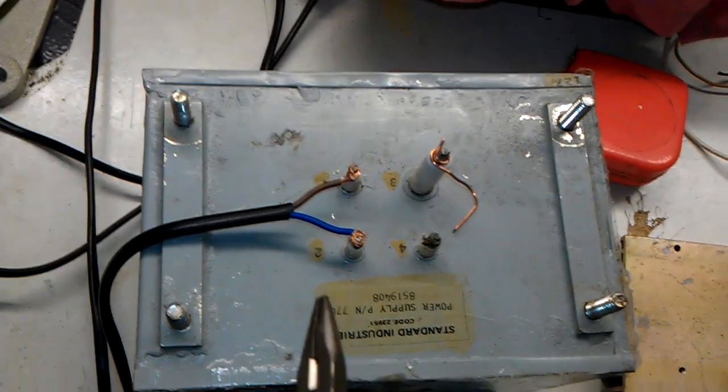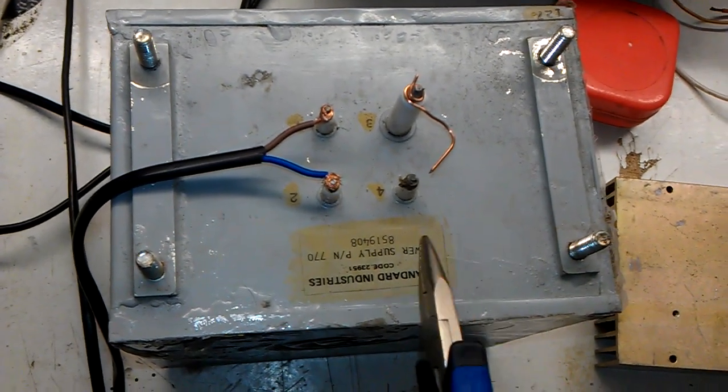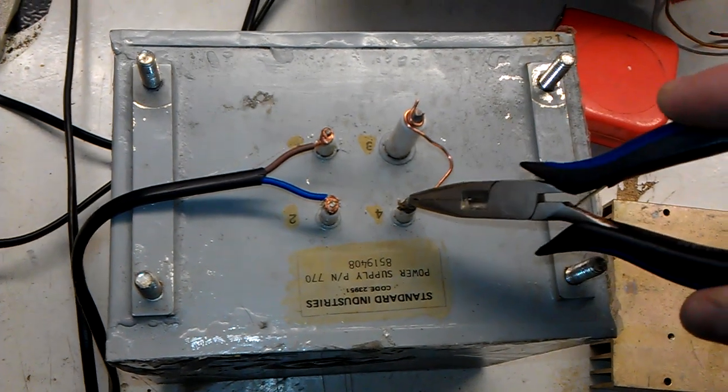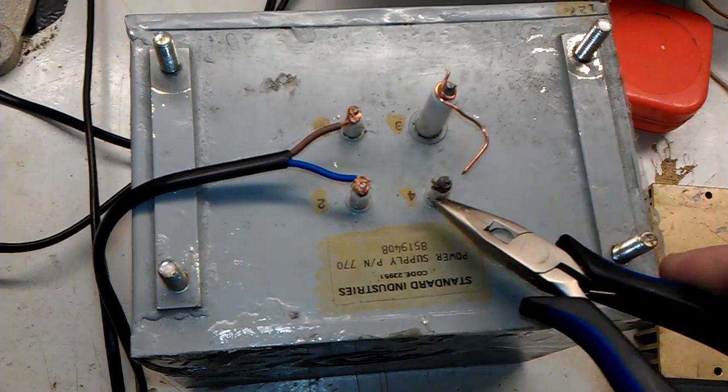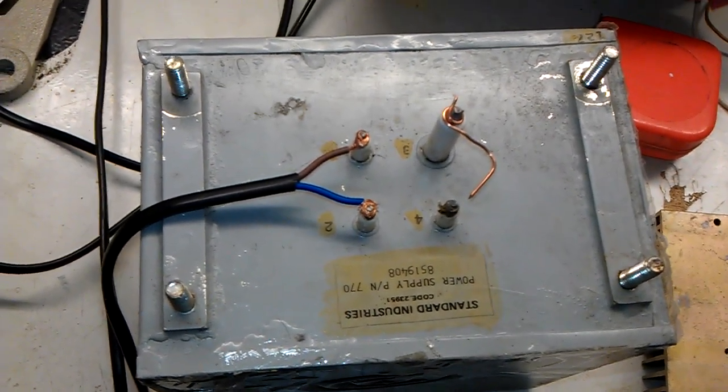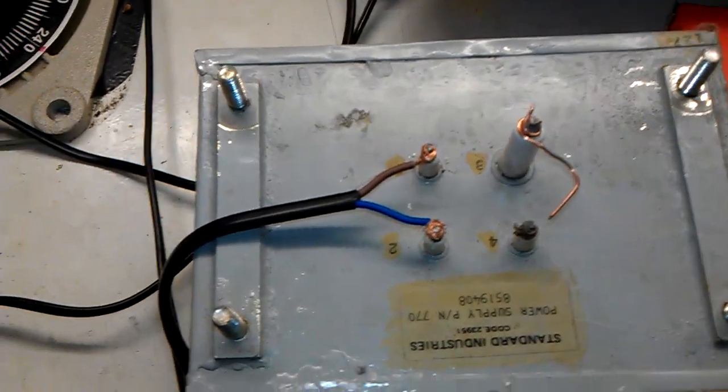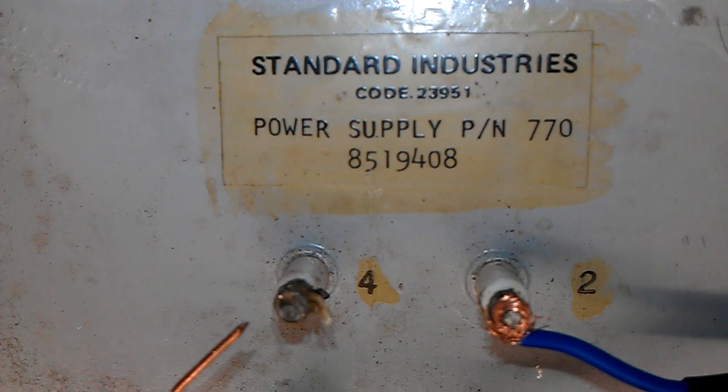And this is the input of 110 volts AC and this is the output. This is an internal, to make sure there's nothing on the output. This is the output. 8000 volts DC out, 1.5 mA. It's upside down. But if I turn this around, you can see who makes it. Standard Industries.